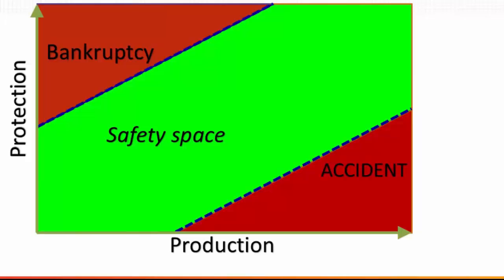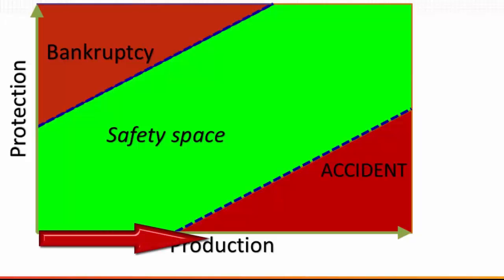The protection equals the layers of Swiss cheese in our organizational accident model. Each of these layers costs resources — time, money, assets, or effort. The other dimension is our level of resources dedicated to production. The more resources we dedicate to production, the more we will produce and the more money we make. However, it is clear that both extremes are bad. If you totally disregard protection and put only resources into production, sooner or later you will have an accident.